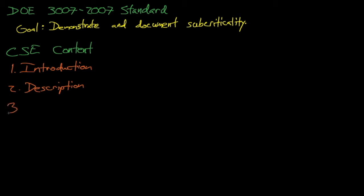Next, we should list any unique or special requirements relevant to this process that are not usually associated with or documented in CSEs. While we don't need to document rules, DOE orders, or ANSI ANS standards that are routinely applicable to criticality safety, we should discuss any specific technical guidance or requirements that are especially pertinent to this particular CSE.